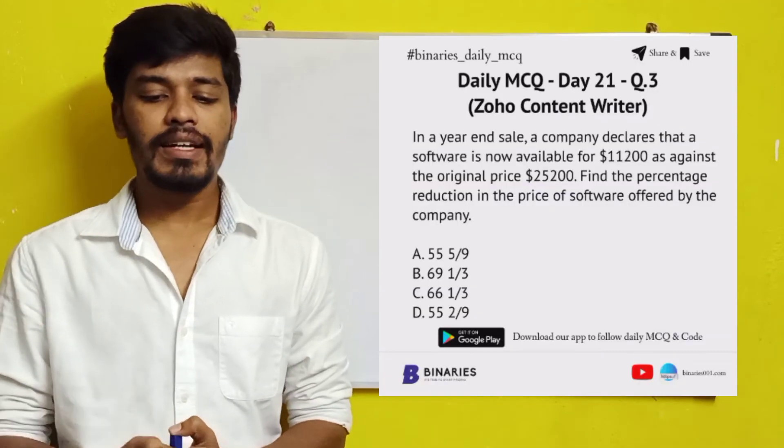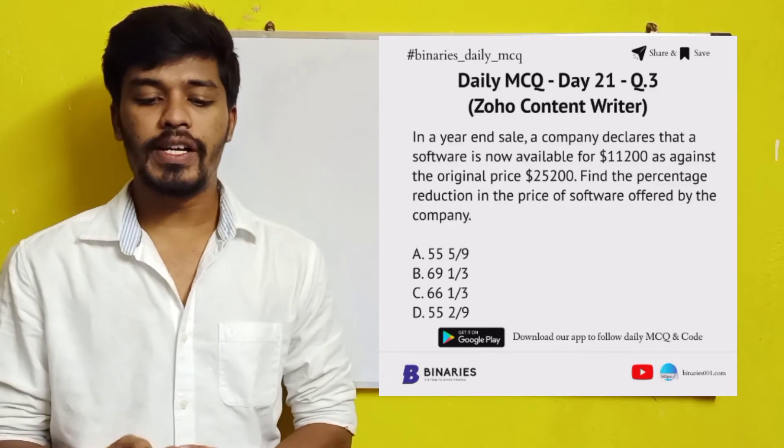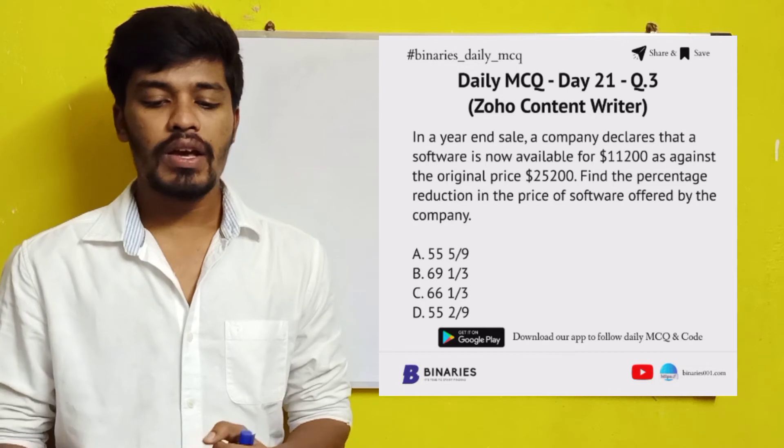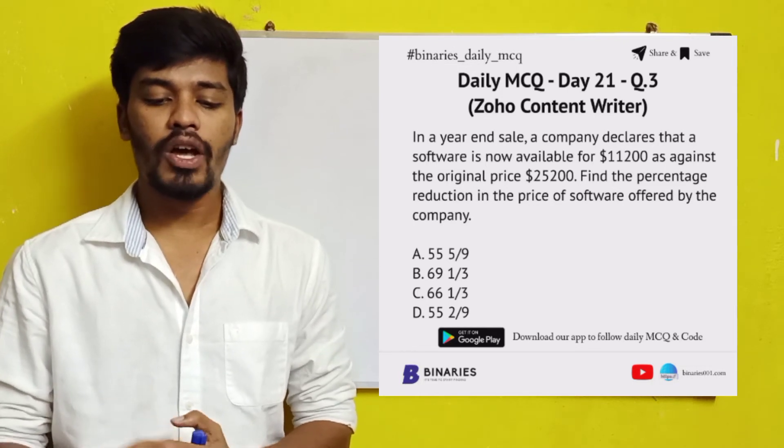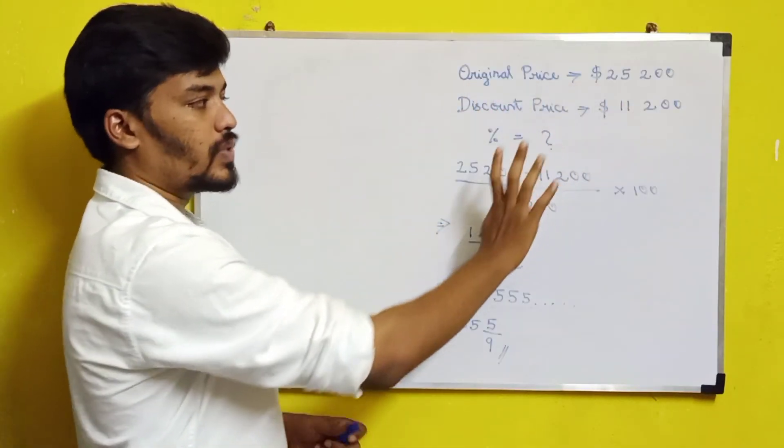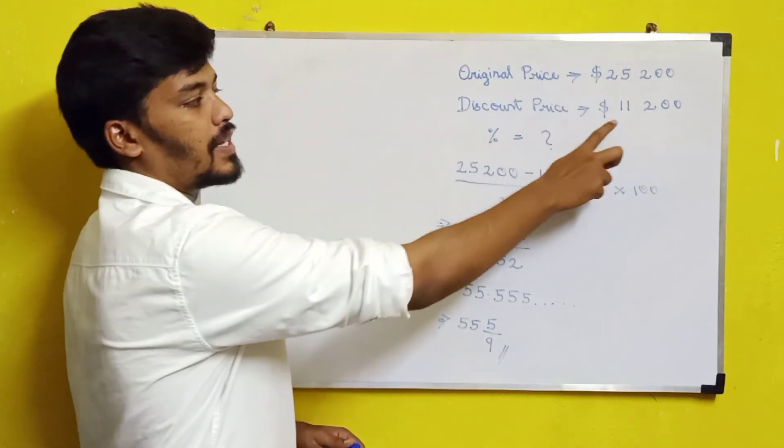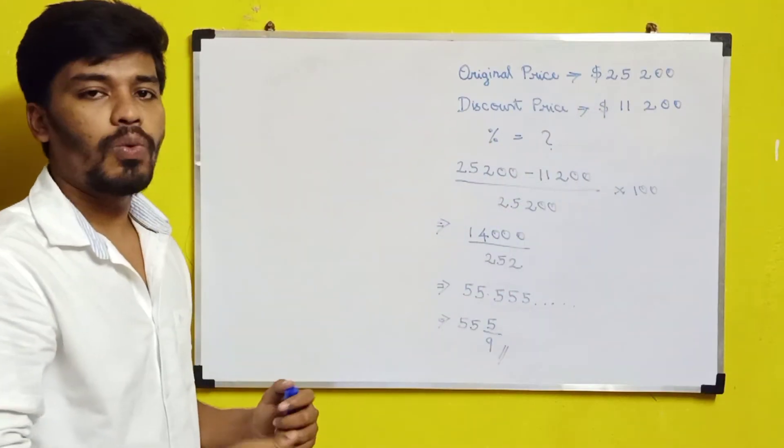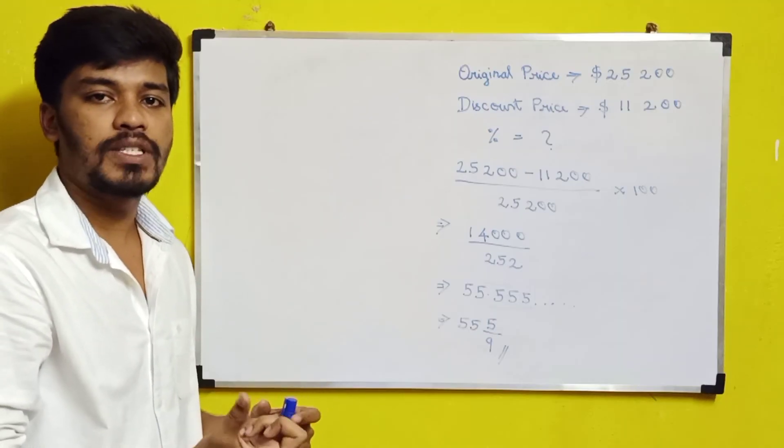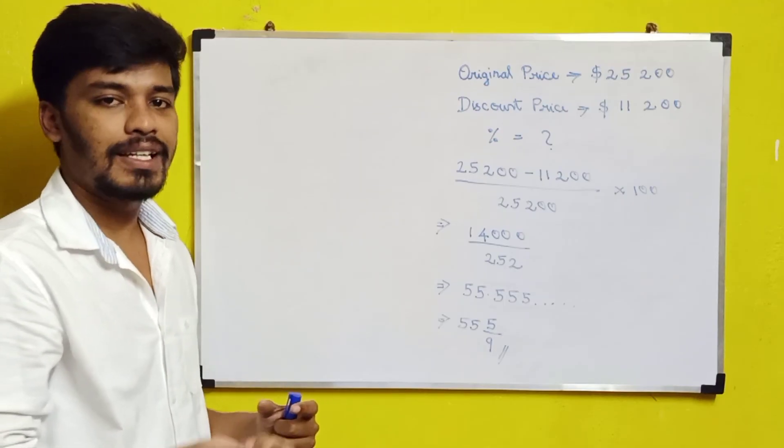The last question is: in a year-end sale, a company declares that software is now available for $11,200 as against the original price of $25,200. Find the percentage reduction in the price. The original price is $25,200 and the discounted price is $11,200. We need to find the percentage reduction. Since this is a year-end sale, we'll calculate it as a discount percentage.